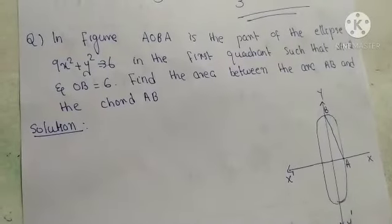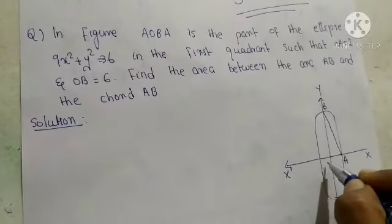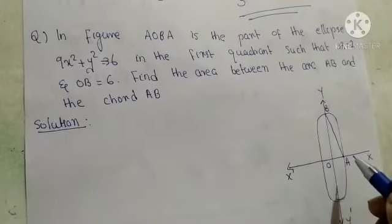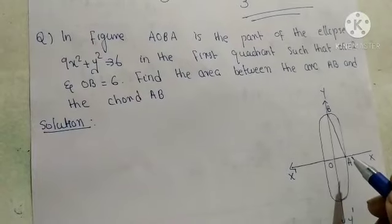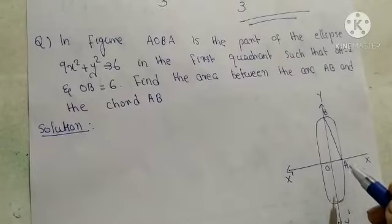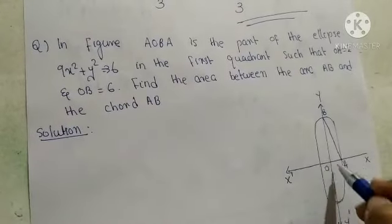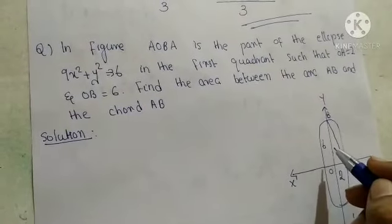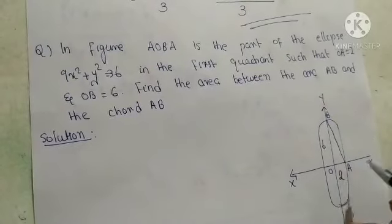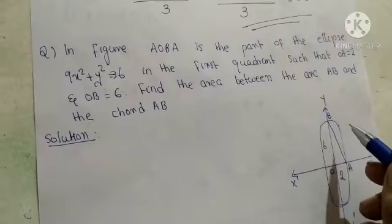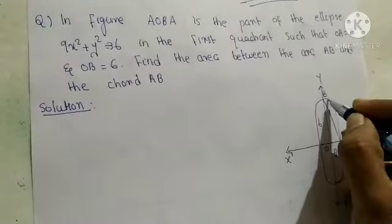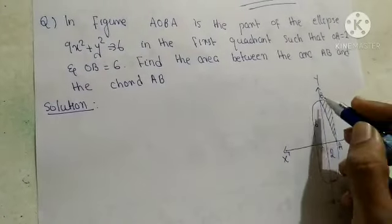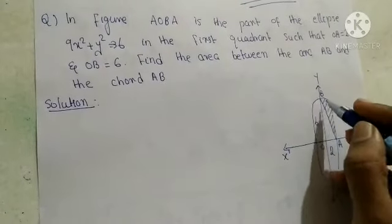This is our next question. In the figure, AOB is the part of ellipse 9x square plus y square equal to 36 in the first quadrant such that OA equal to 2 and OB equal to 6. Find the area between the arc AB and the chord AB. In this question, we need to find out the area of this shaded portion between arc AB and chord AB.